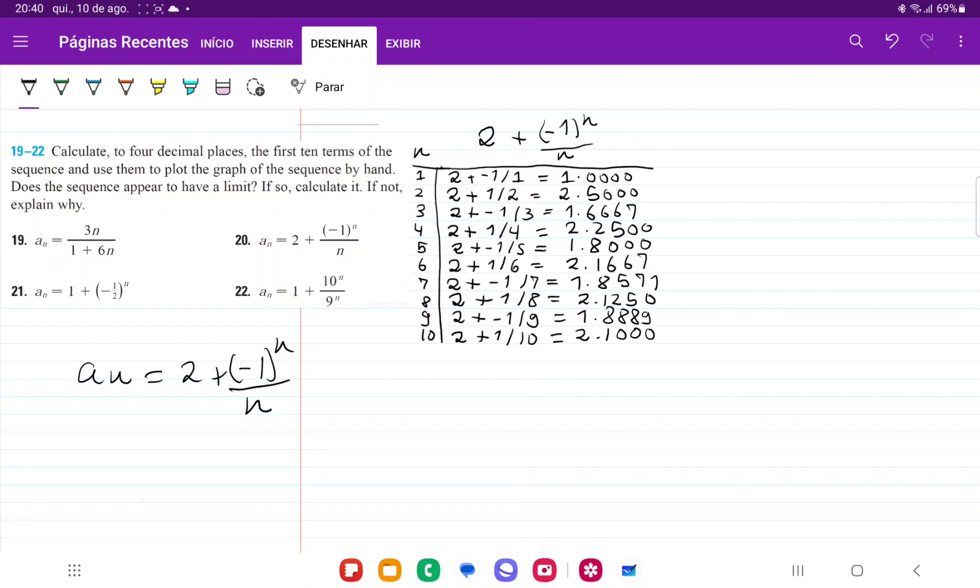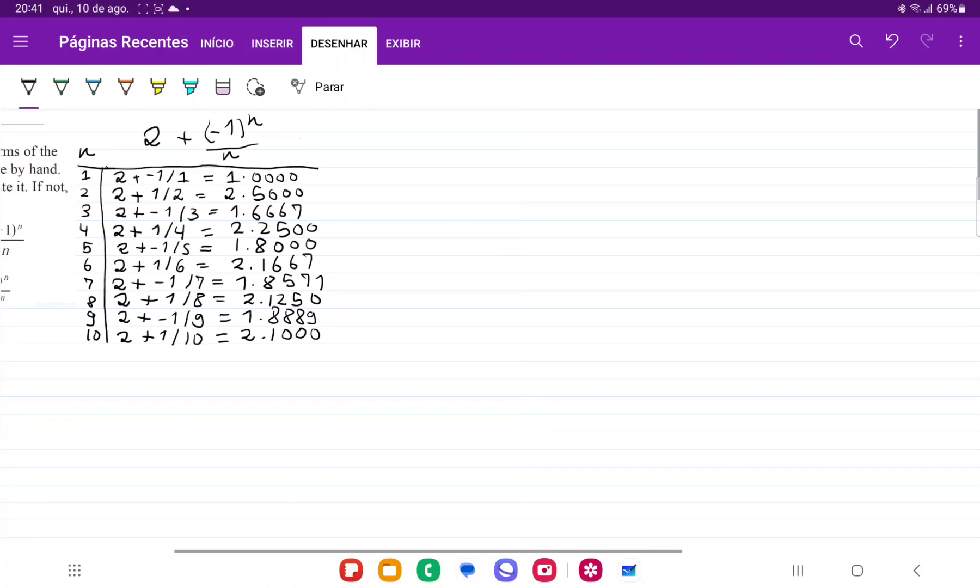So I've gone ahead and I've put it in this table where we're just plugging for n is equal to 1, we go 2 plus minus 1 to the power of 1 over 1, for n is equal to 2, we go 2 plus minus 1 to the power of 2 over 2, and so on, until we get to n is equal to 10, which is 2 plus minus 1 to the power of 10 over 10. And so I've gone ahead and I've put in these values here, and then it's asking us to graph this.